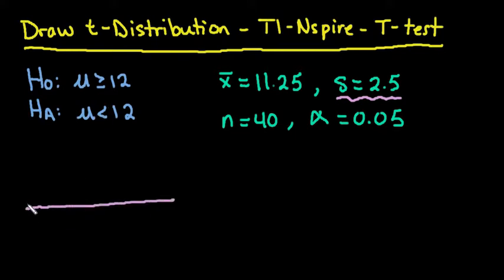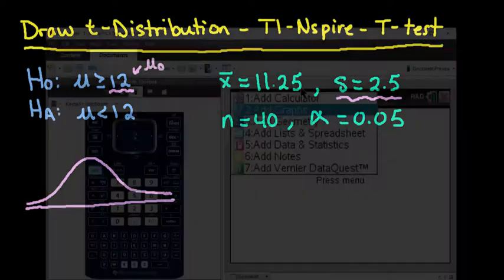So remember since this is a t-test, our t-distribution would look like a bell curve. The calculator will shade the p-value for you and kind of show you where to set it up on a number line down here. Okay, we also need to know our mu-naught. Mu-naught is whatever the mean is in your null hypothesis. So this right here would be our mu-naught that we would put into our calculator.